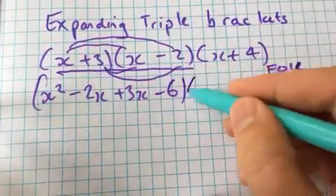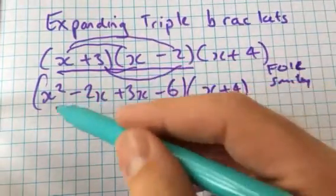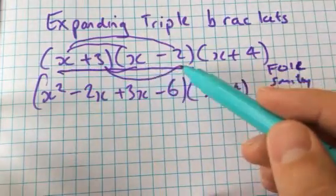x squared minus 2x plus 3x minus 6. Put those in brackets because I know that they're going to be multiplied by that. So whichever method you do to expand those two brackets, just make sure that you have four terms. And every term in this bracket is multiplied by every term in that one.